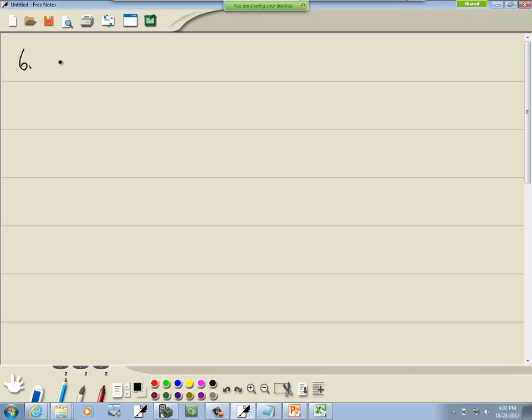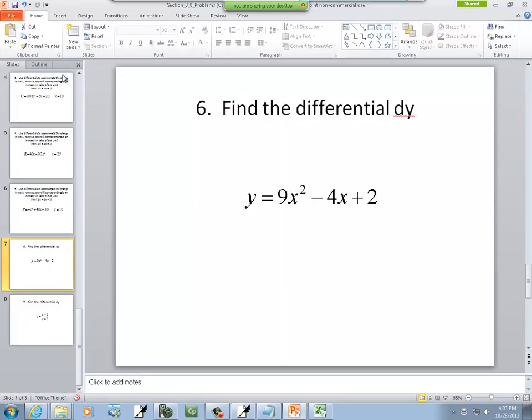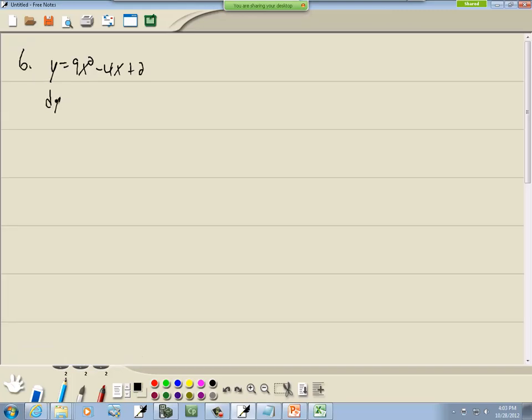Now these are just a lot easier, they just want you to find dy. So we got y is equal to 9x squared minus 4x plus 2. You want to find dy so we'll take the derivative of y with respect to x. That gives us 18x minus 4 and then we multiply both sides by dx and we got dy is equal to 18x minus 4 dx. That's our answer.